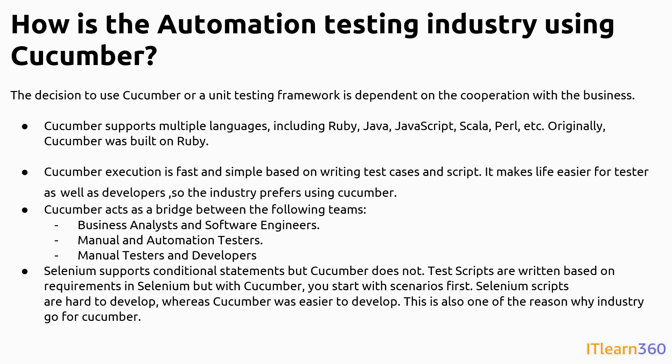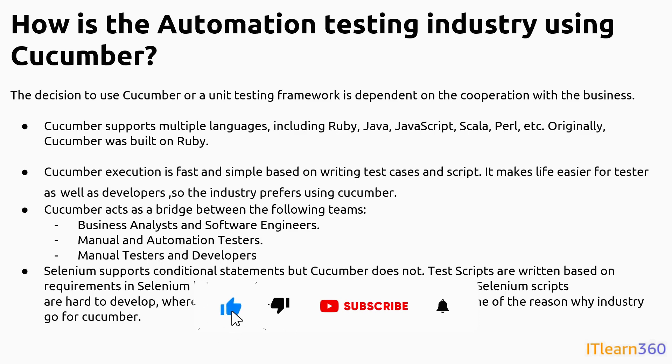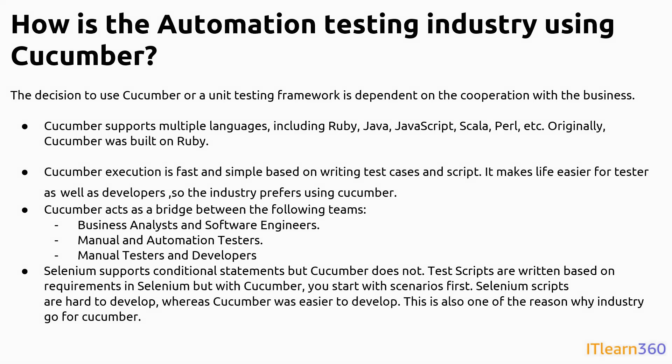Another important point is the comparison with Selenium. Selenium supports only conditional statements, but Cucumber does not have that restriction. Test cases in Selenium are written based on requirements, but with Cucumber you can start with the scenario first. Selenium tests are harder to develop, whereas Cucumber tests are easy to develop. This is also one of the reasons why the industry goes for Cucumber — you have things organized around test cases, and based on that you execute the complete process, making life easier in comparison to other tools.